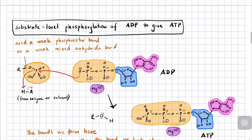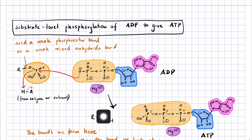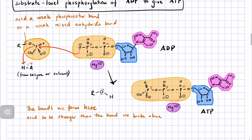The reaction only works if the bonds you form are stronger than the bonds you break. In at least one case in glycolysis, we're going to pay for this reaction by having an alcohol that can tautomerize into a more stable isomer.